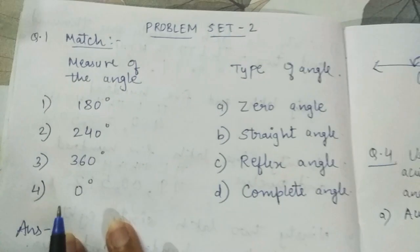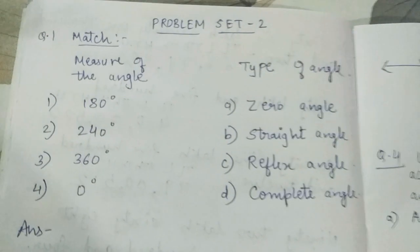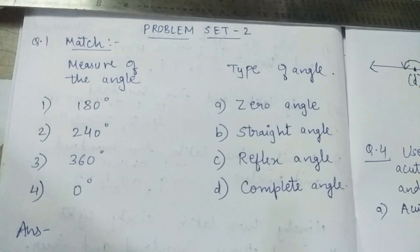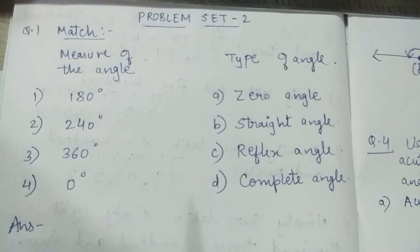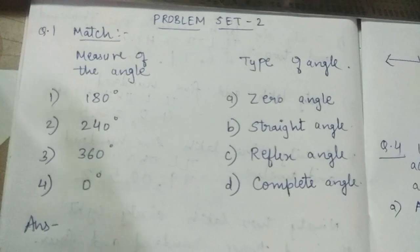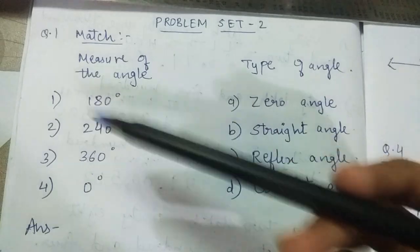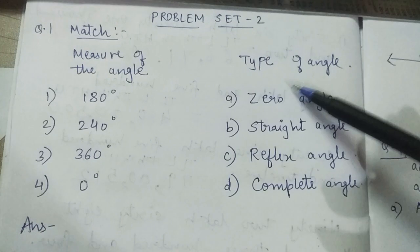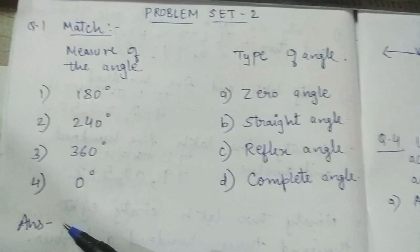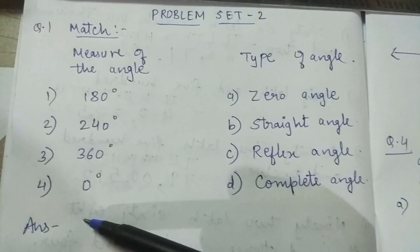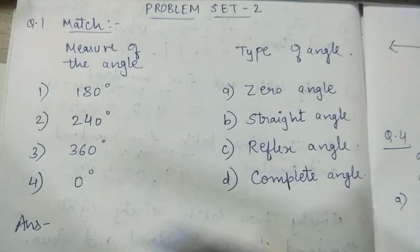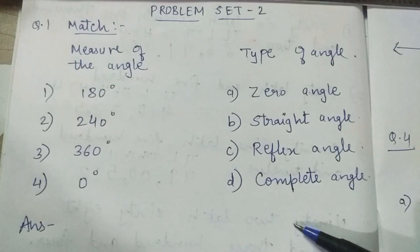Practice Set 2 is very simple, based on our previous session. We just have to identify the type of angles throughout the practice set. Question number 1 is a match-the-following: first column is measure of the angle, second column is type of angle. We can write the left column and in front of that write the correct answer, or use whichever way is easier to understand.